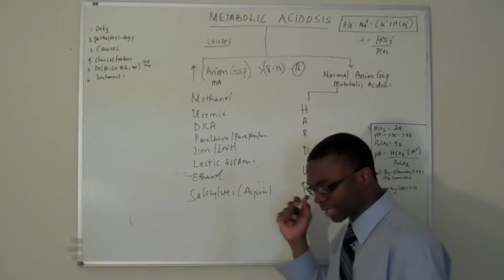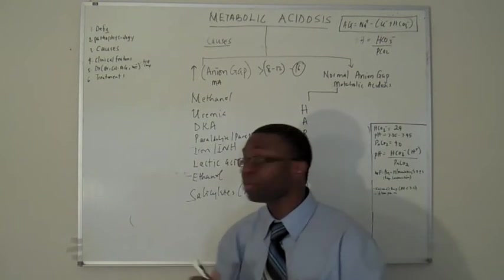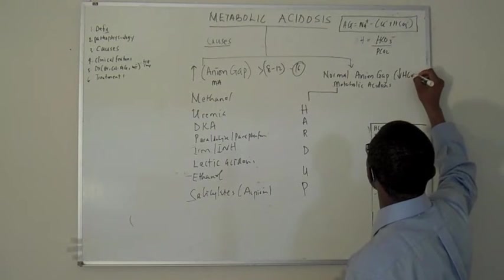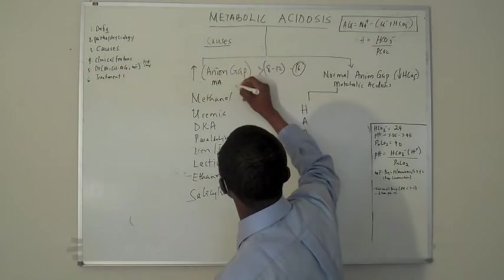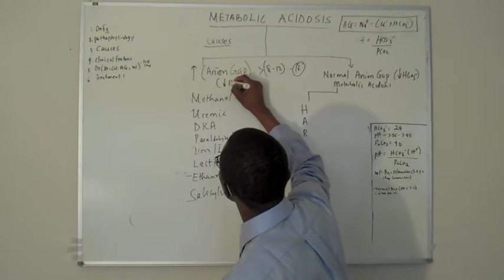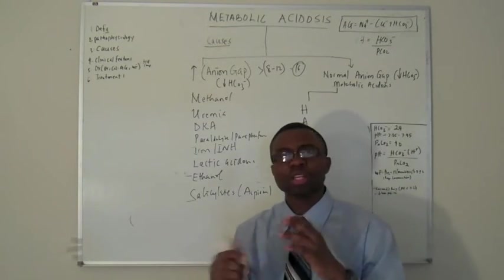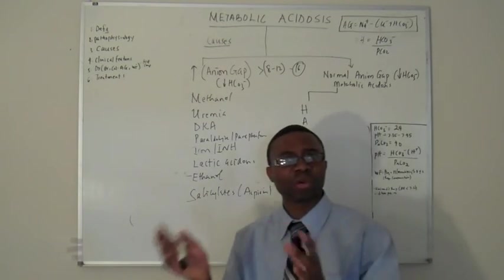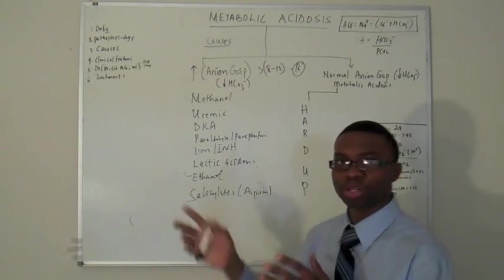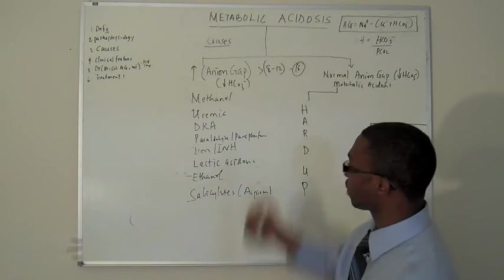It's called HARDUP. Now, before I state anything about this, in normal anion gap, your bicarb is still going to be low. So, let me be clear. Bicarb is low in this case, too, right? Because it's acidosis. The only difference is when you punch in your numbers. Like, you know how sodium is normally like 135 to 145. Chloride is around 100. Bicarb is 24-ish in that range. You do the math and you get between 8 and 12.